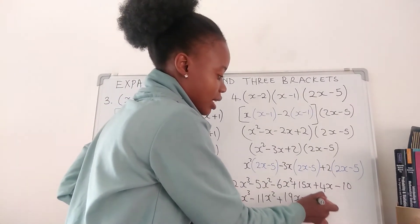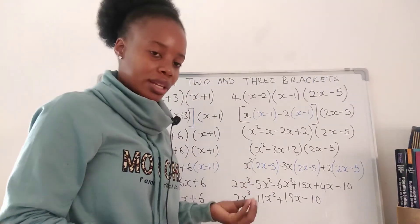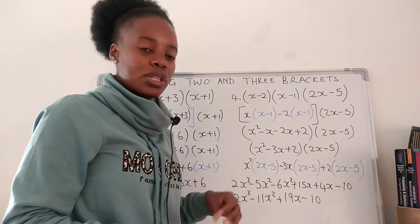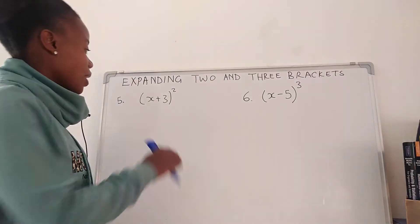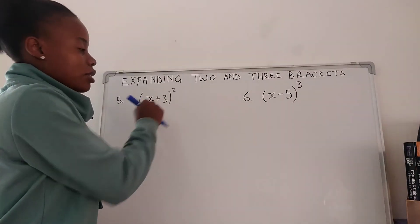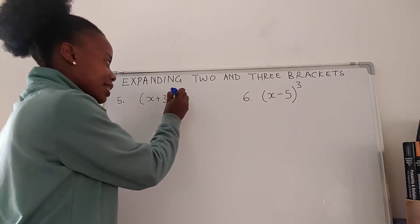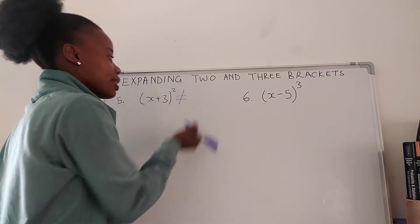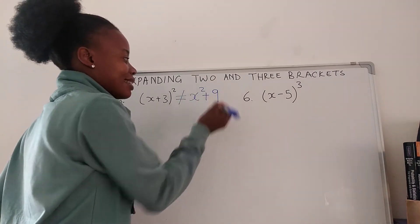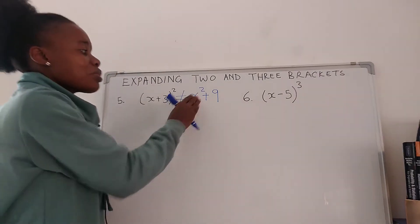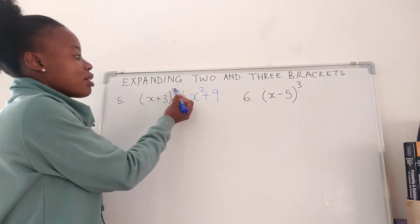And this is just negative 10. This is how to remove three brackets. Now let's do number five. Number five: we have (x + 3) squared. This is not x squared plus 9 — others just say x squared plus 3 squared, but that is wrong, it's very wrong.